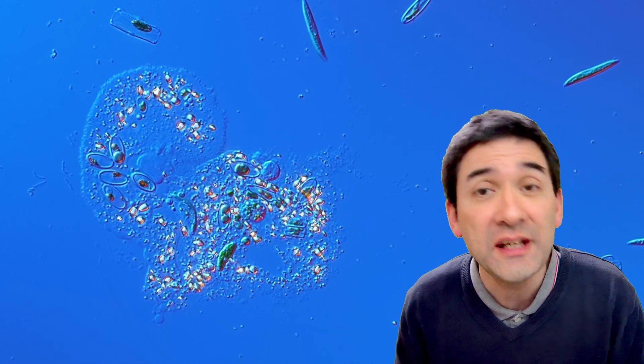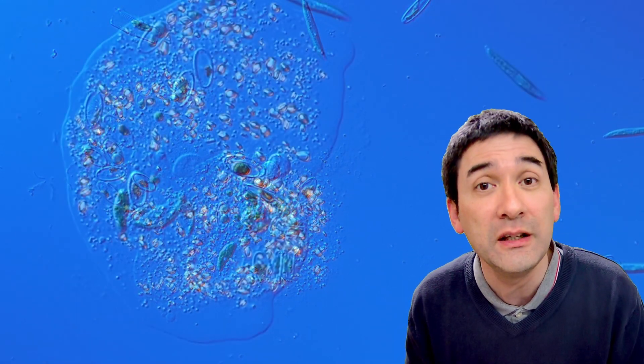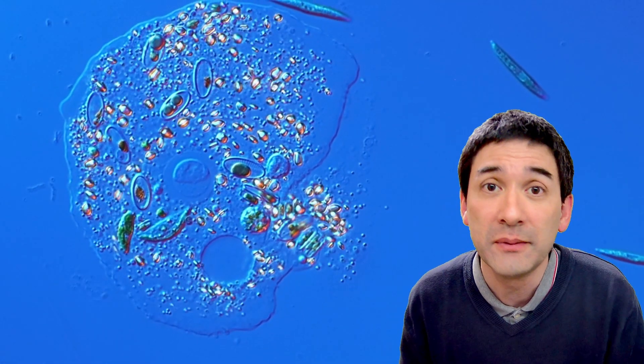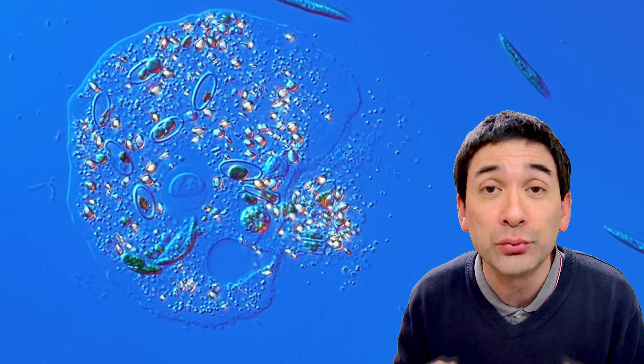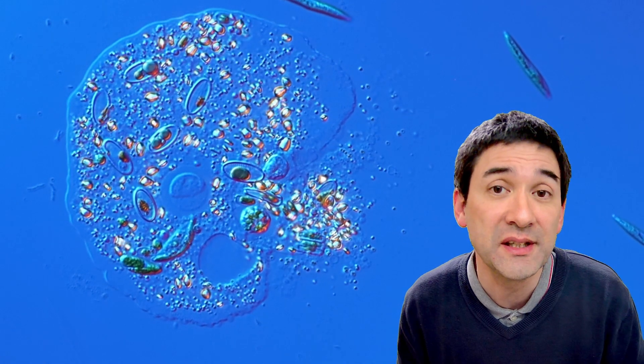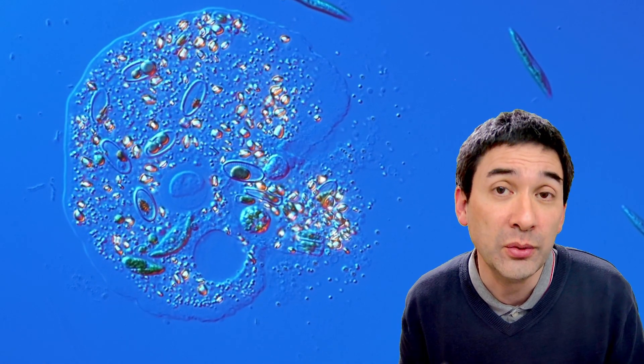Now those amoeba can be quite easily grown by simply putting some organic material into a pond water sample, decomposing leaves for example, and then they will actually also break down the organic substances.